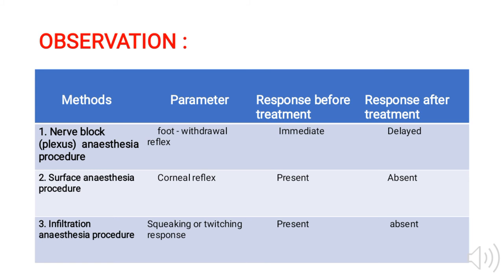Now coming to the observations, which are method-wise. For nerve block anesthesia, the parameter being checked is the foot withdrawal reflex. Before treatment with procaine hydrochloride, the leg withdrew immediately; after treatment there was a delay in foot withdrawal. Similarly, for surface anesthesia the parameter is the corneal reflex — before treatment it was present and after treatment it is absent. For infiltration anesthesia, the parameter being checked is the squeaking and twitching response.